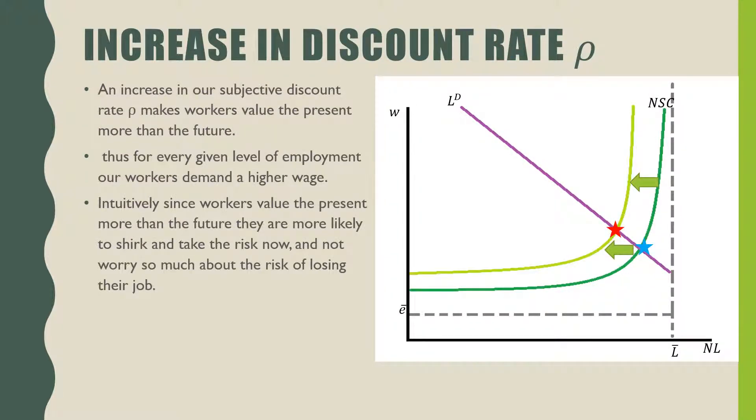If we have an increase in the discount rate of our workers through some process of self-discovery or some sort of expectation about the future, workers are more likely to shirk under these conditions. This shifts our no shirking condition back. Intuitively speaking, workers value now more than they value the future, so they're more likely to take the risk of shirking. In short, we end up seeing a decrease in the labor supply but an increase in the wage demanded.